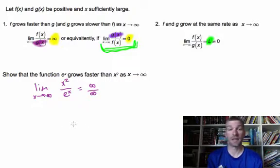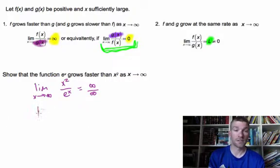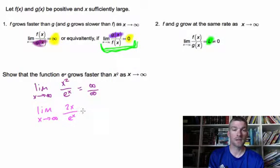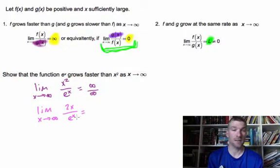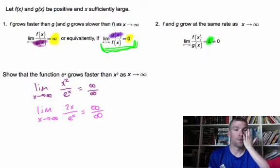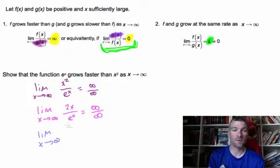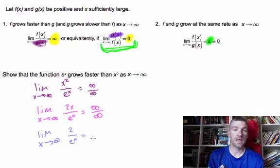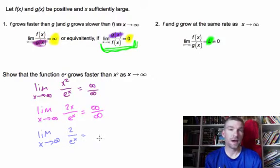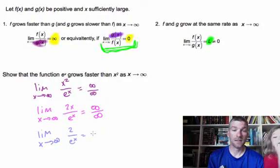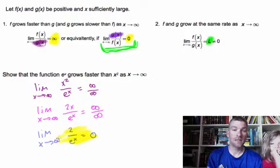Since we have an indeterminate form, we take the derivative of the top and the bottom and look at the limit again. The limit as x approaches infinity of 2x over e to the x — that's why we love e to the x, the derivative never changes. Plugging in very large values still gives infinity over infinity, so we take one more derivative. The derivative of 2x is just 2, and the derivative of e to the x is e to the x. Now the numerator never changes but the denominator gets very large, so this limit goes to zero.